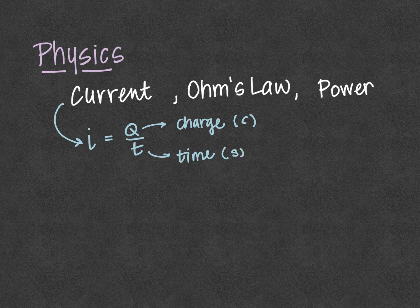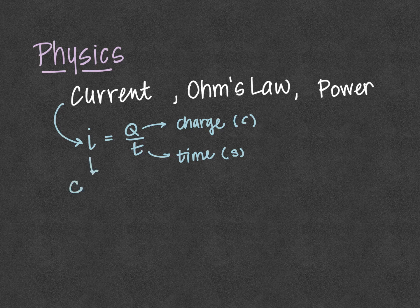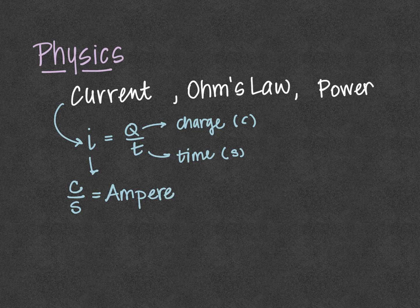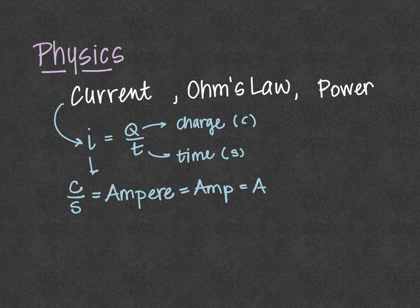And a coulomb per second is the unit for current, which is also known as an amp or an ampere, or just simply A, because of the work done by Andre Marie Ampere.